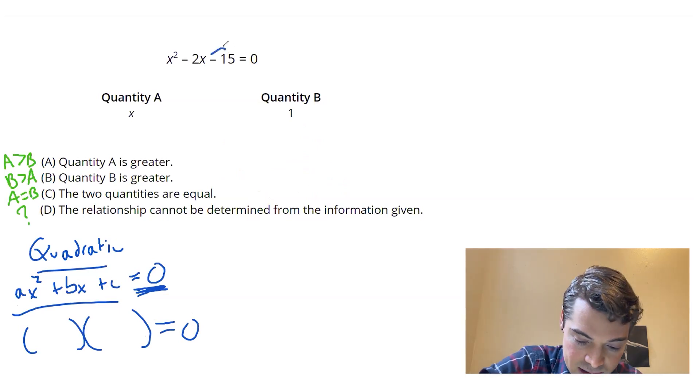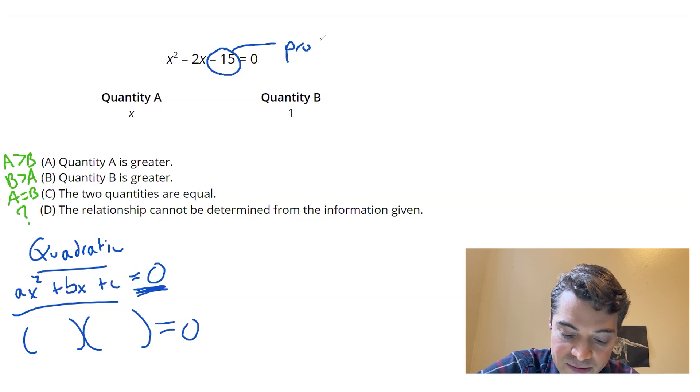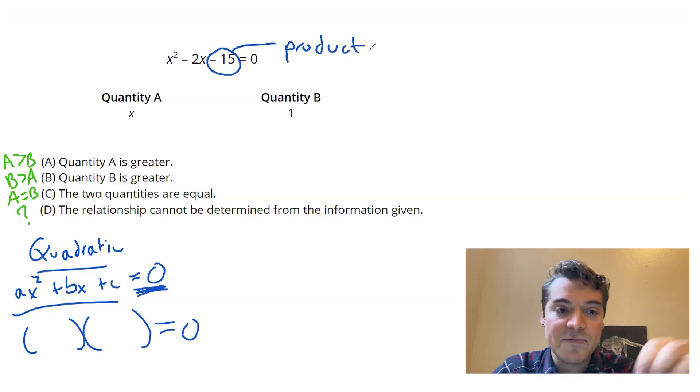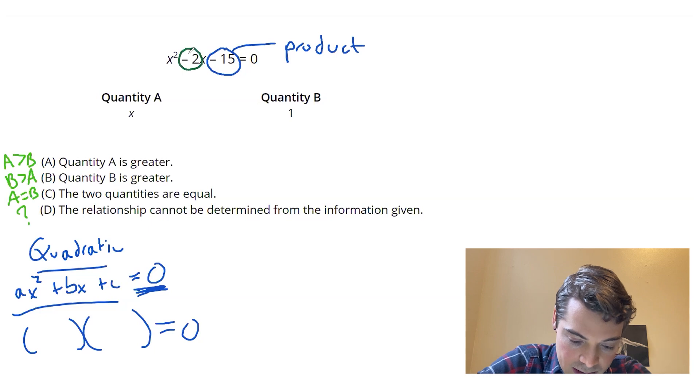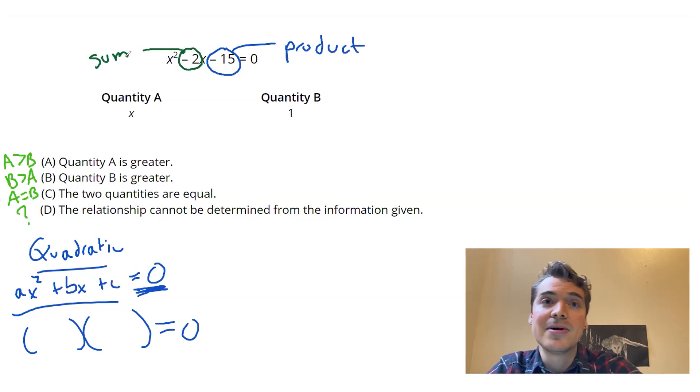And the way it works is I want to look at this c term here, negative 15. I want to find two magic numbers that give me a product of negative 15. And then I want to look at the b term, negative two. And I want those two magic numbers to give me a sum of negative two.